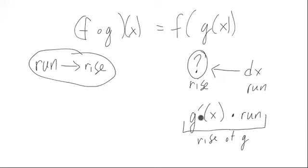So let's take this now, this rise of g, and that actually is equal to the run of what's going into f right now, because we're putting that into f. So this is the run that we're going to put into f.